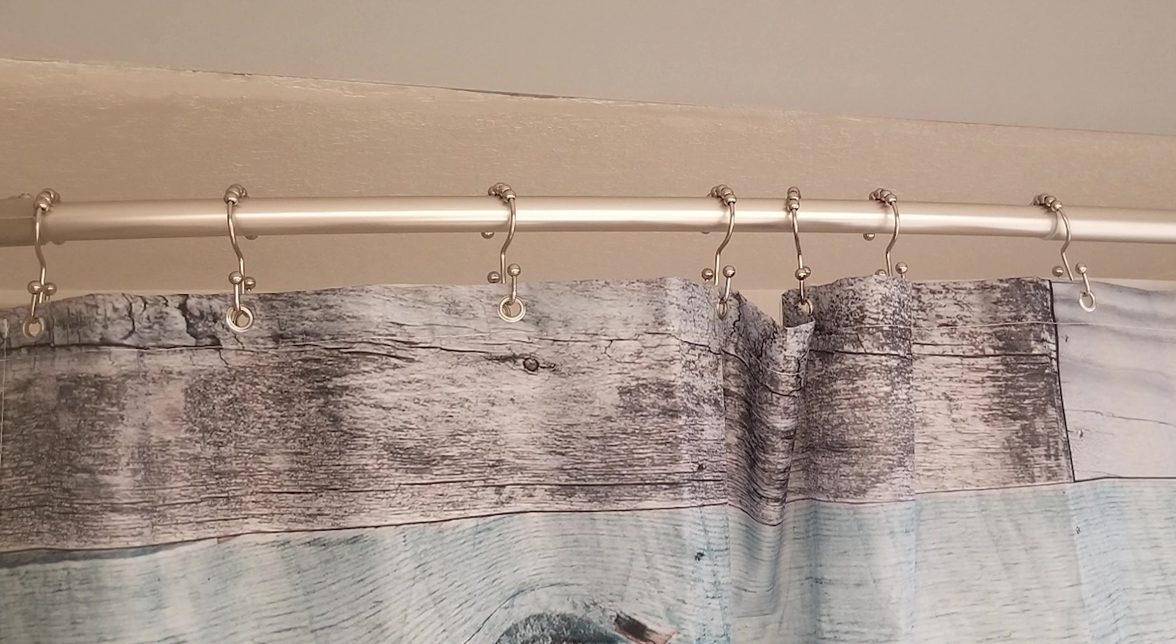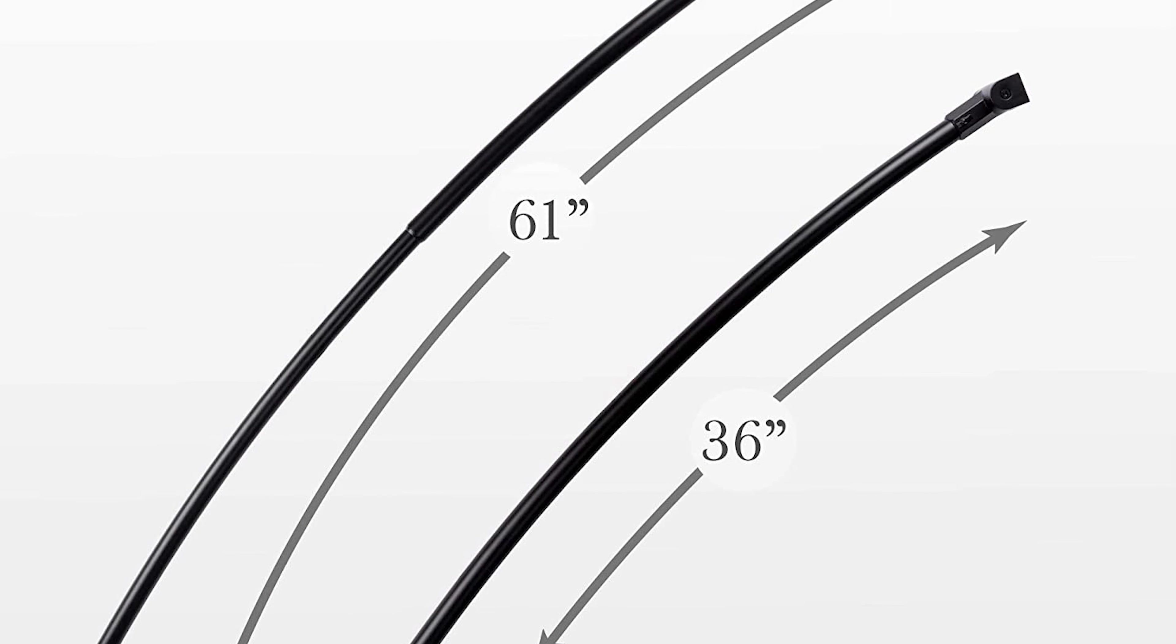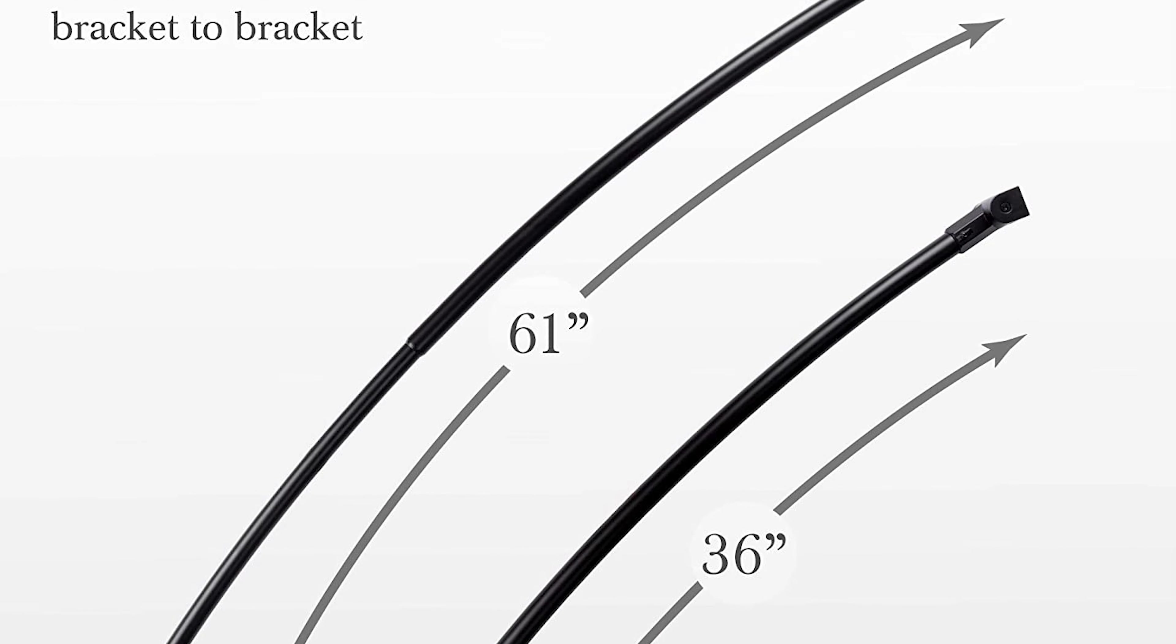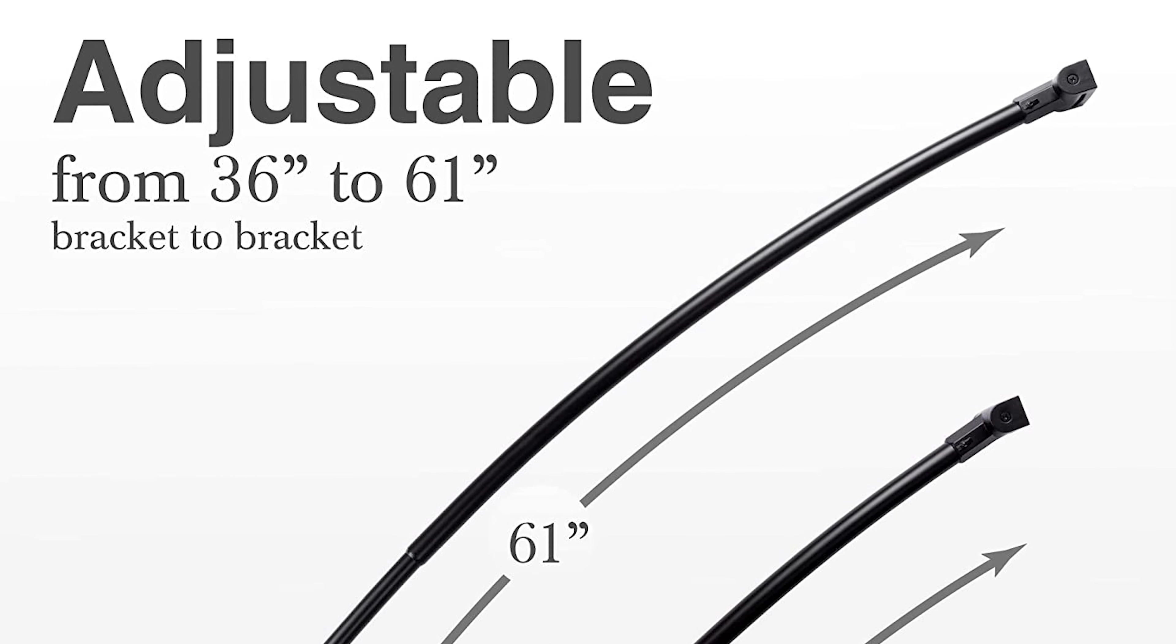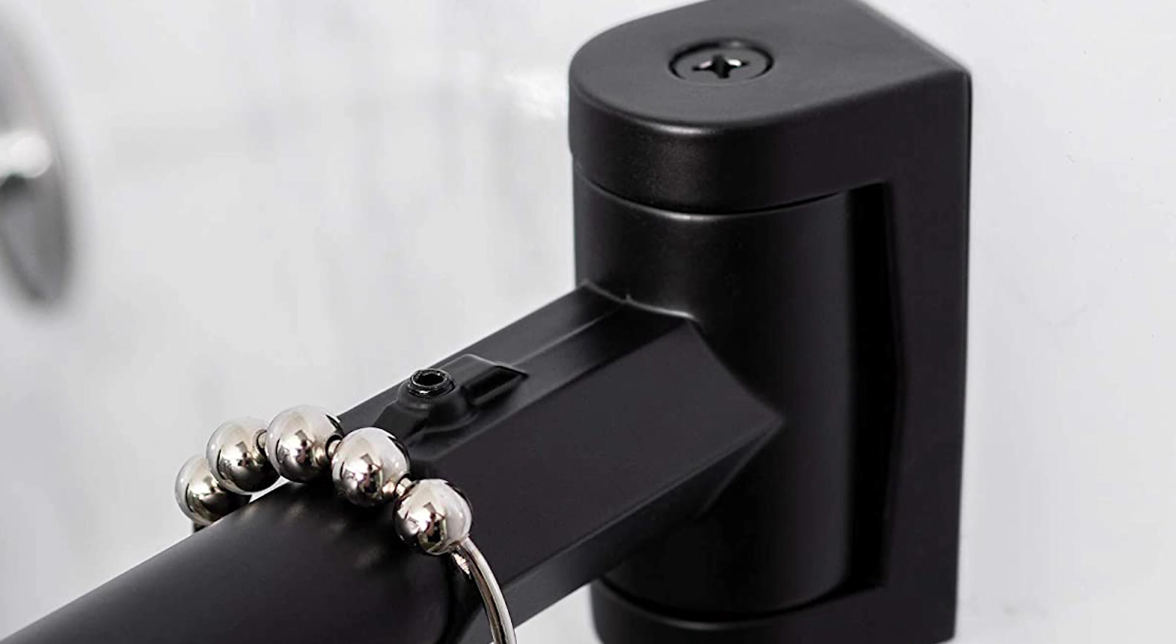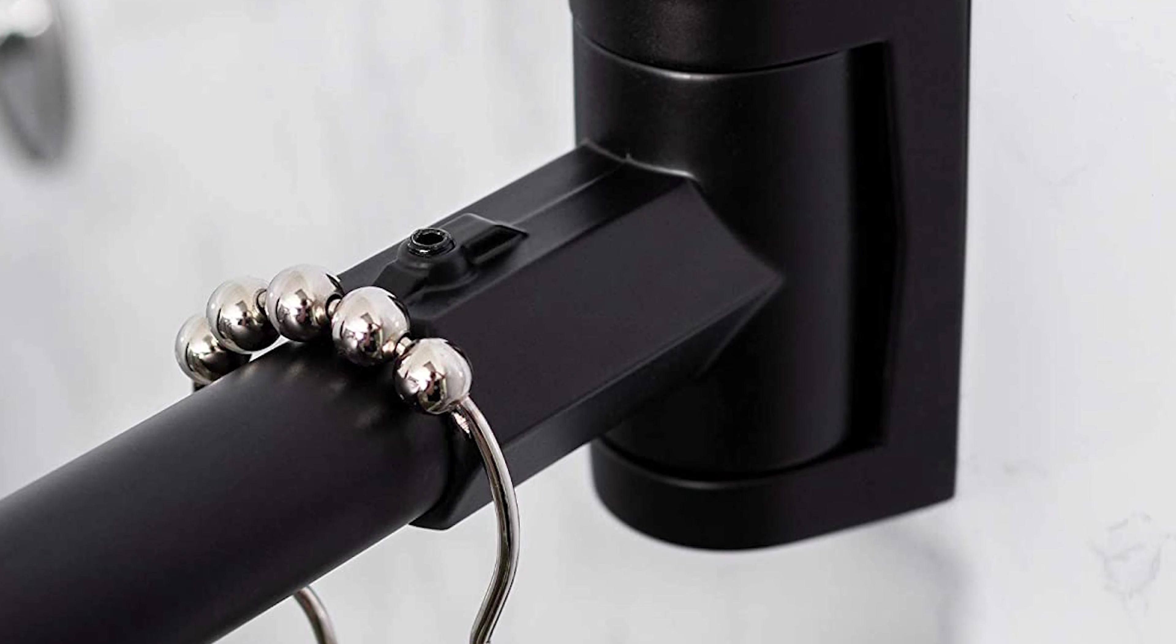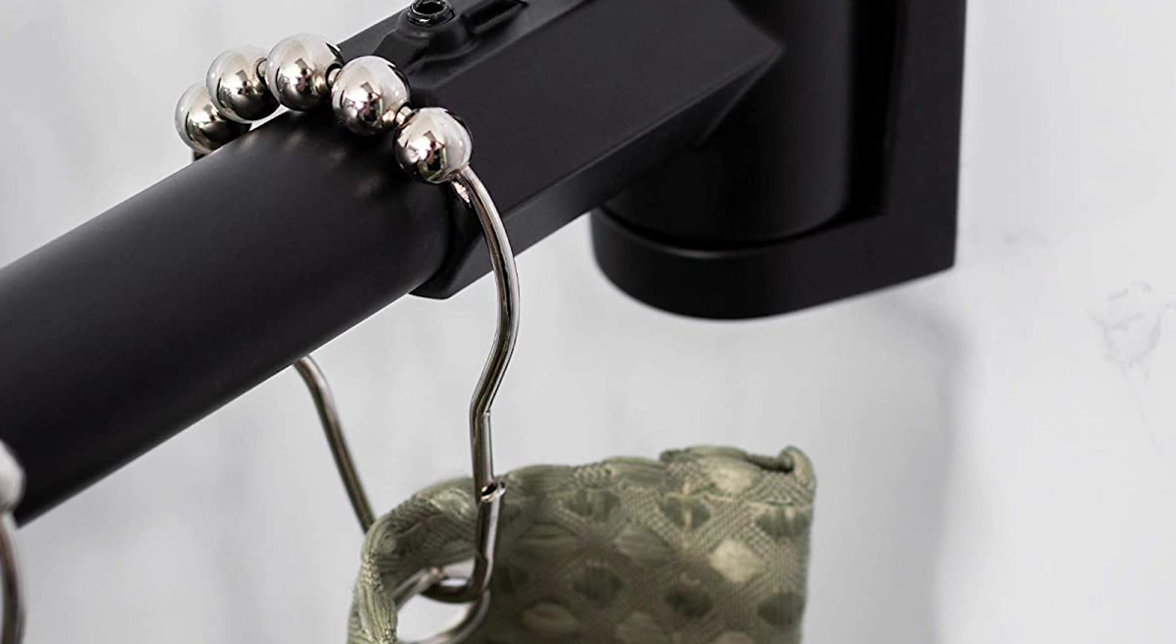The telescoping design adjusts between 36 inches to 61 inches which means that it will fit perfectly into any sized bathroom. This shower rod features an elegant black finish and is constructed of high quality aluminum that is guaranteed never to rust. It comes with a premier curved design that sweeps around your tub maximizing space and giving you a more enjoyable showering experience.